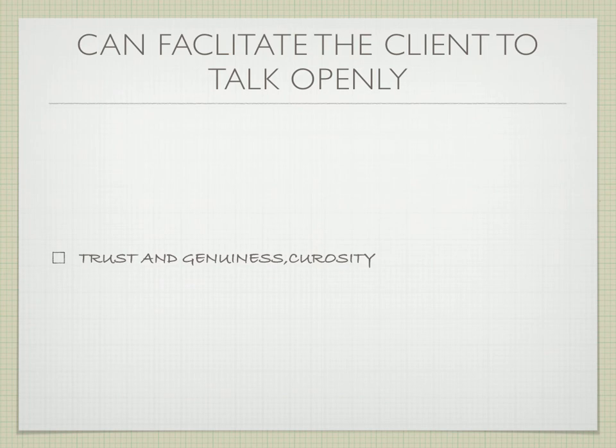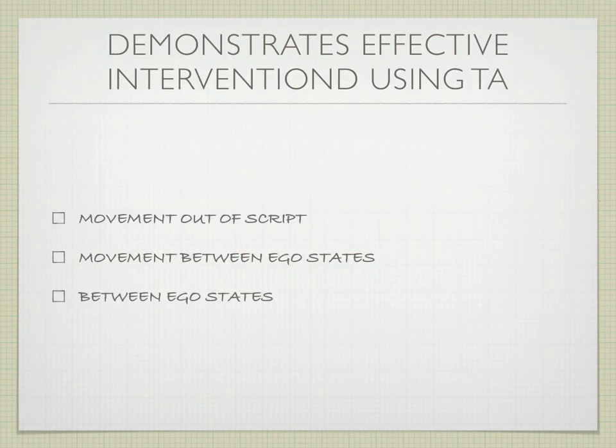The therapist can facilitate the client to talk openly. For that to happen there needs to be a sense of trust between the two people, genuineness, and a sense of curiosity, so that the client feels accounted for and we have rapport building and trust in the process. The therapist can also demonstrate effective interventions using transactional analysis — things like interventions that help the client move out of the script, help the client move between ego states, and that there's a general shift in ego states.